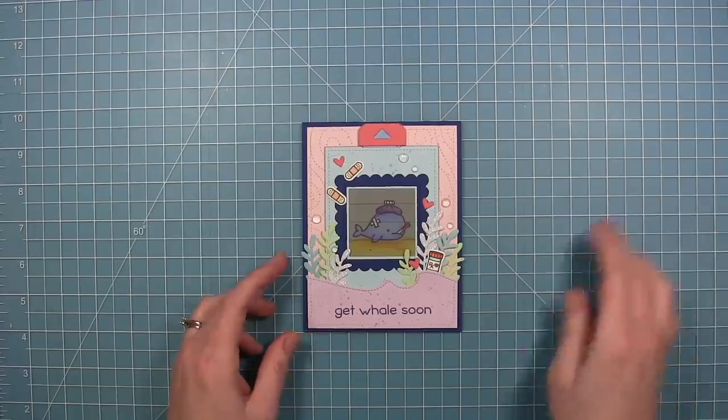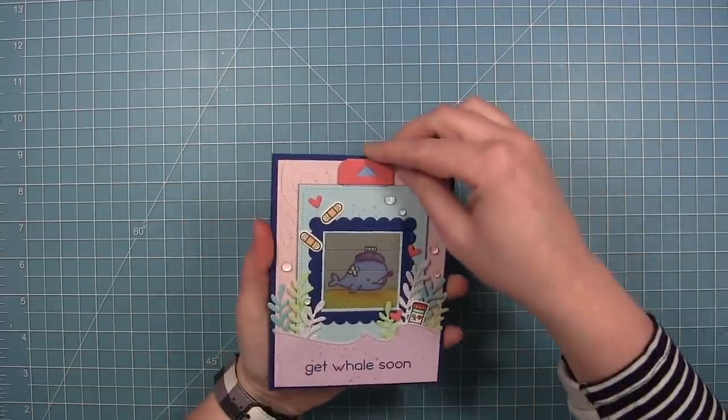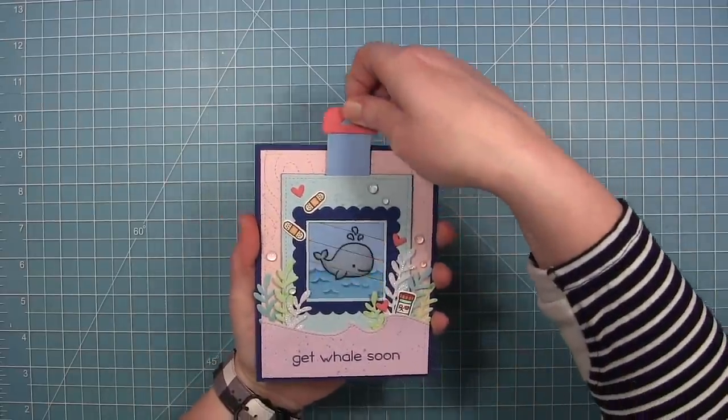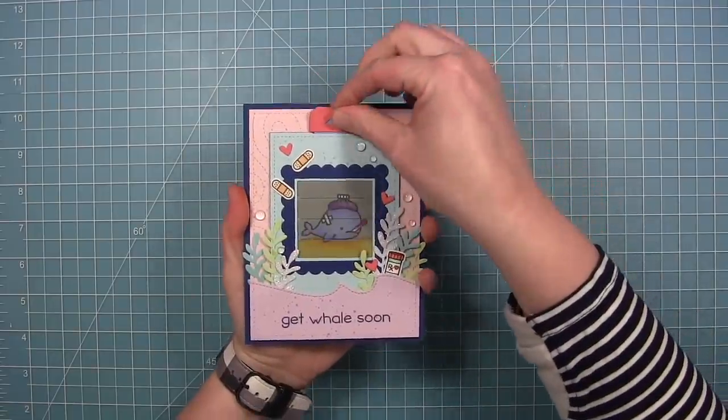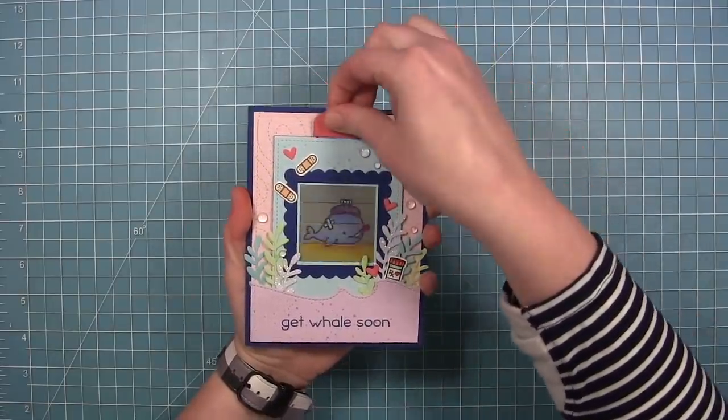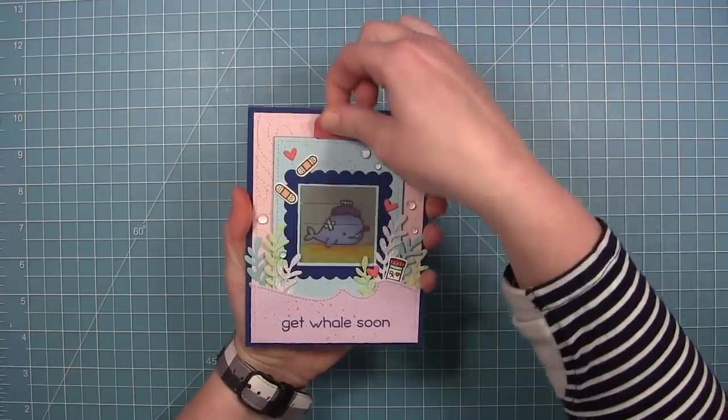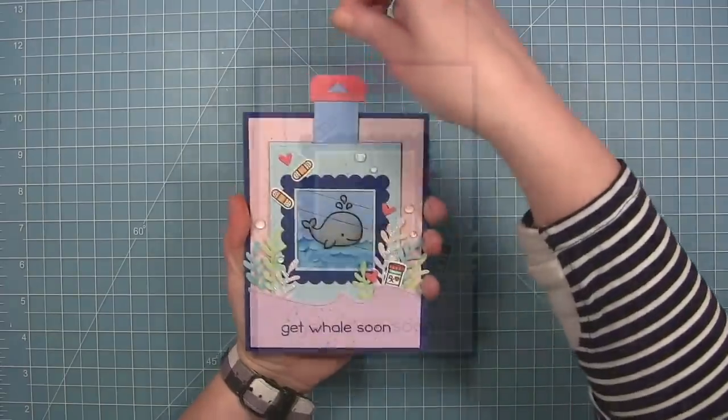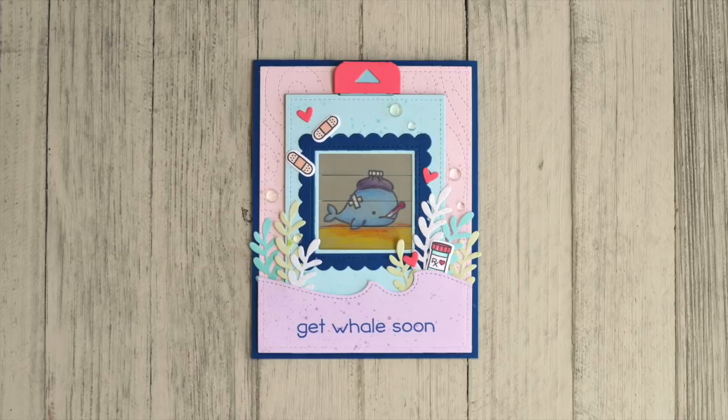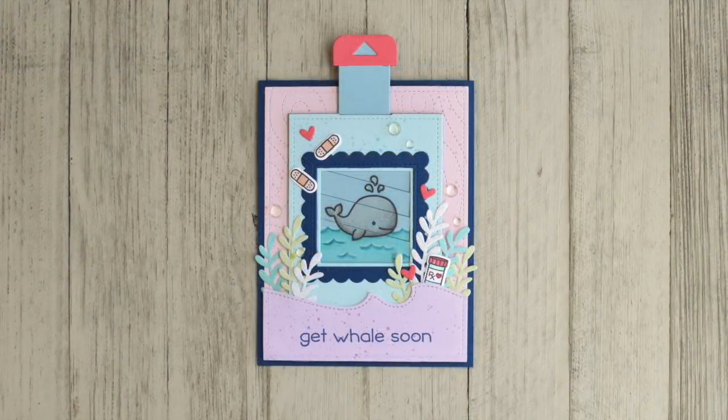And then here is my finished card. So that sick little whale and then the happy whale on the blue. I really love how the colors change with the different cardstocks. And I think you can get a really cool look using the colored pencils. It's just something different than your Copics. So I hope you give it a try.